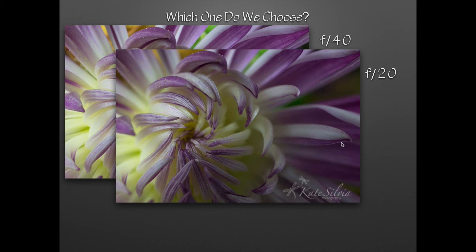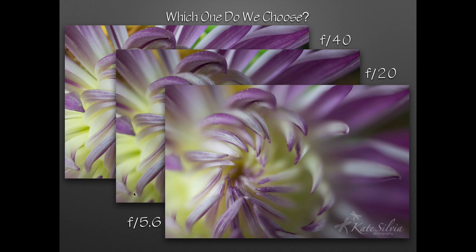At f20, things are getting softer and the background is getting less defined. And if I go all the way down to f5.6, very little is in focus. The way I like to remember it — especially when I was first starting out — is the lower the f number, so f40, f20, f5.6, the less is in focus.